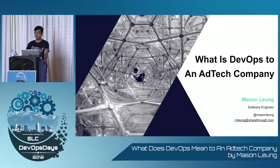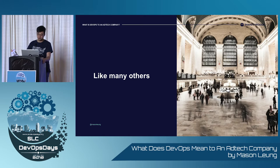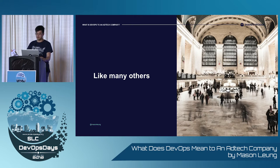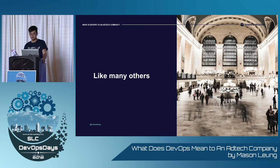My name is Mason Leung, and this is my journey finding and learning DevOps and what it means in an ad tech company. The ShareThru platform serves millions of requests daily. Some of our customers include Time Inc., CBS Interactive, and CBS Sports. We have to pay special attention when we are dealing with our infrastructure — a little mishap can result in many, many unhappy customers. We don't have one monolithic application, but a number of microservices that interact with each other and are managed by different engineering teams.